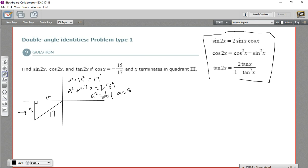That opposite side is 8. The sine is the opposite over the hypotenuse. The sine of x, we'll just put it up here, is going to be negative because we're in the third quadrant, 8 over 17.